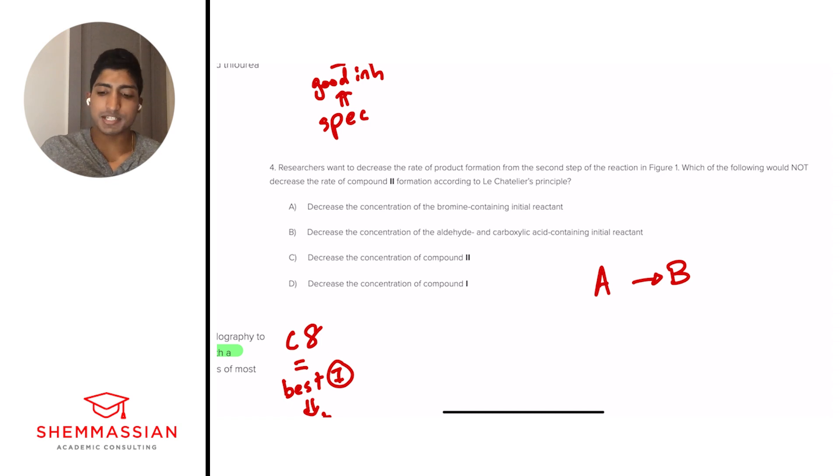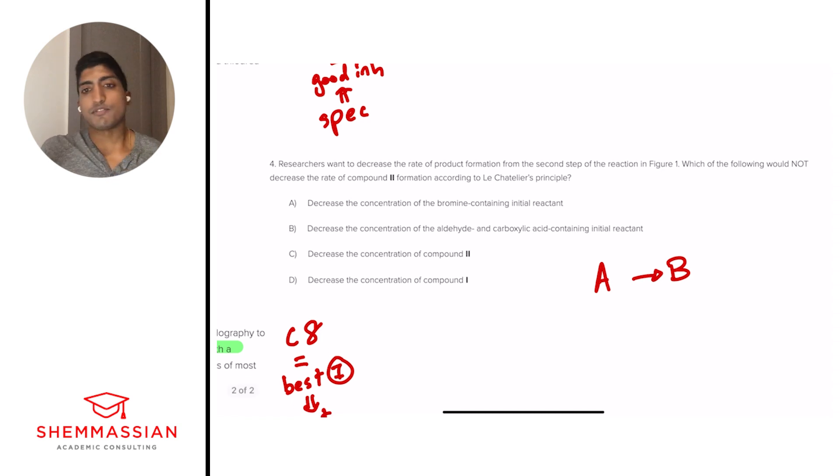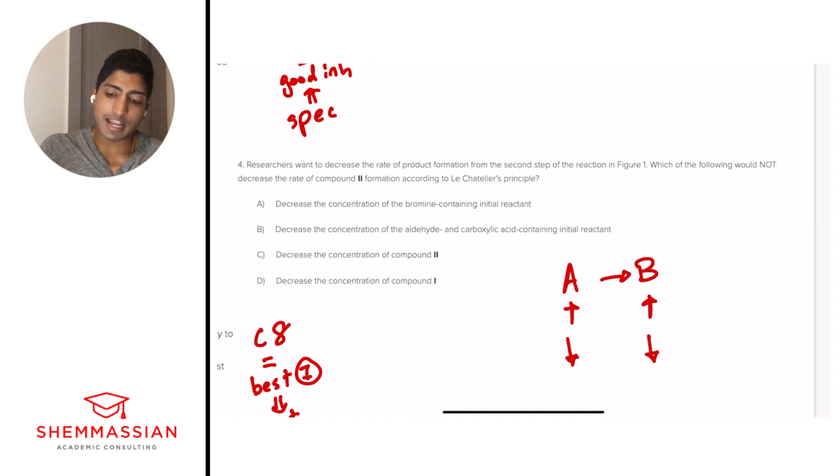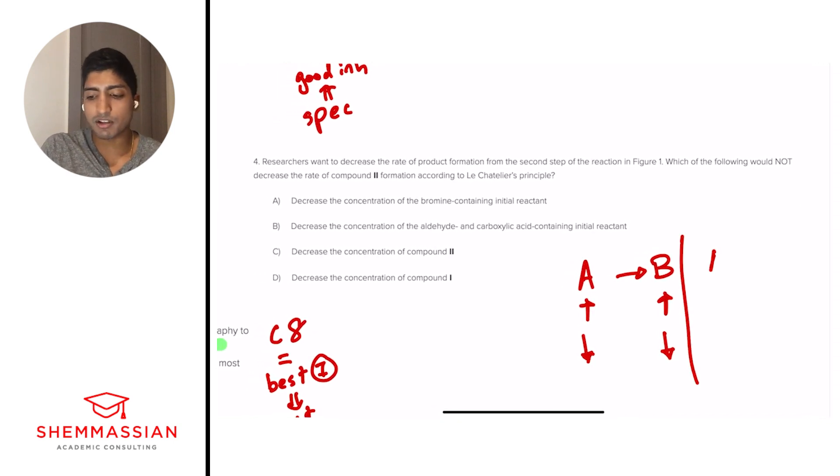Before we get into the answer choices, it's important to have a broad understanding of what Le Chatelier's principle means. And I like to break it down into the simple idea. If you have A going to B, the idea is, what would happen if you increase A? If you increase A, then you're generally going to increase B. It just follows the same trend. Now, let's imagine if you decrease A. So you have less input. What's going to happen to B? You decrease B. So this is the idea. Whatever you take and put in, if you increase that, then it's going to move in that forward direction and increase the latter. If you decrease that, it's going to decrease the latter.